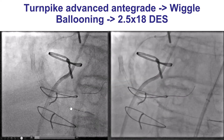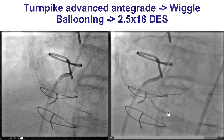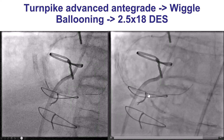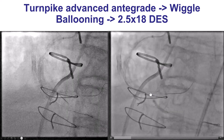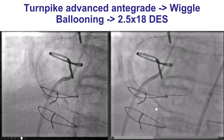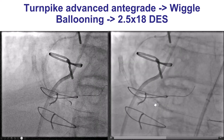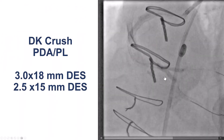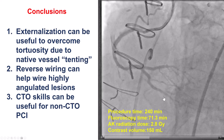So now we had access into the vessel. We kept the retrograde wire initially until we delivered a balloon to confirm equipment delivery, then delivered the stent. We removed the externalized wire — since we never want to stent over an externalized wire — and then deployed a stent into the PDA. We then finished the bifurcation at the PDA-PLV with DK crush, which opened up both vessels quite nicely.